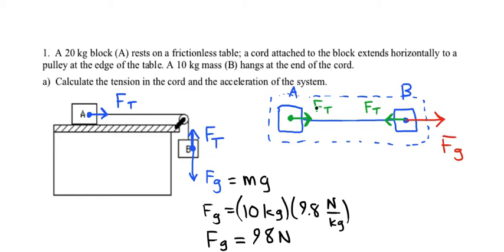Now the FT that acts on A and the FT that acts on B actually cancel each other out. You can see one pulls to the right and one pulls to the left. So that force can't actually cause acceleration of the system. There's only one force that really causes acceleration on this system, and that is FG.